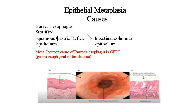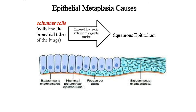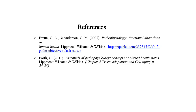Epithelial metaplasia causes: Barrett's esophagus — stratified squamous epithelium. The most common cause of Barrett's esophagus is GERD (gastroesophageal reflux disease). Another cause: columnar cells lining the bronchial tubes of the lungs, exposed to chronic irritation from cigarette smoke, undergo squamous metaplasia — normal columnar epithelium on the basement membrane is replaced by squamous epithelium.